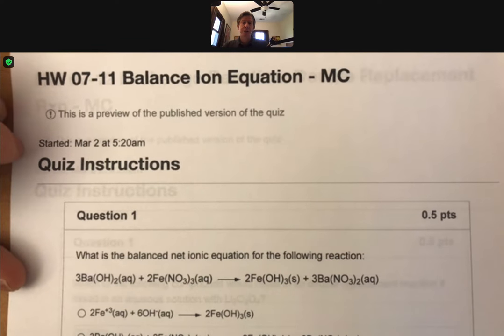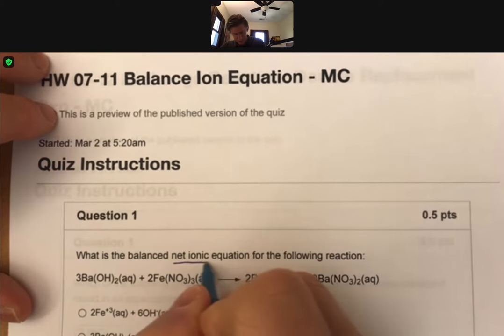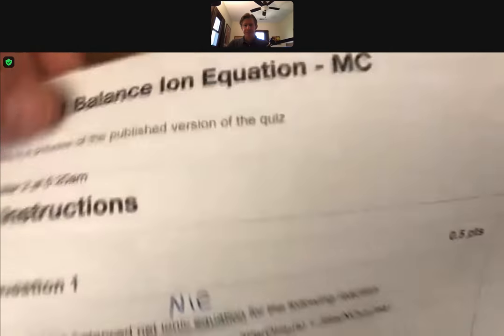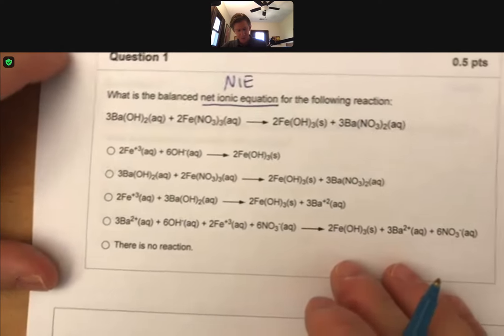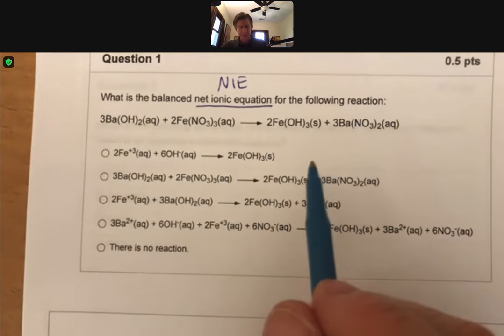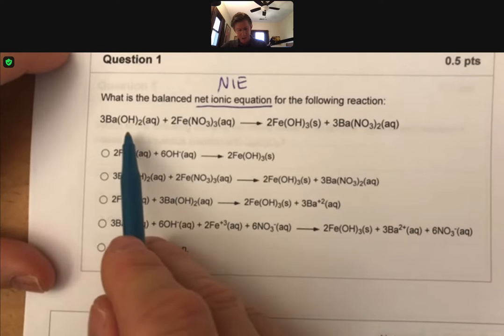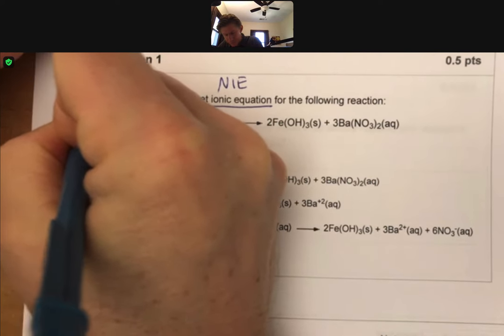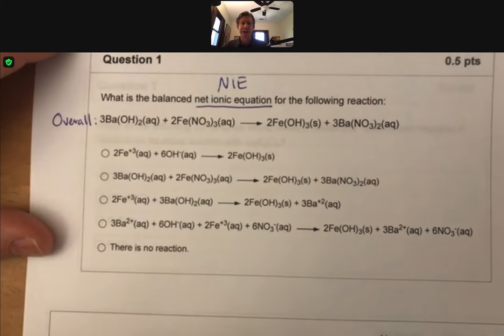This homework question deals with the balanced ion equation, or really, since the question says, what is the net ionic equation for the following reaction. This one is the overall, and we're being asked for the net ionic.